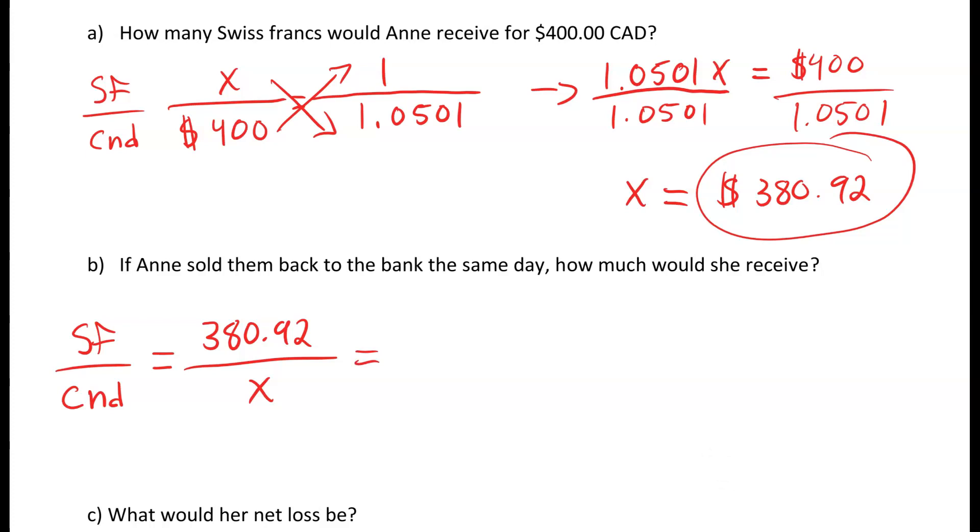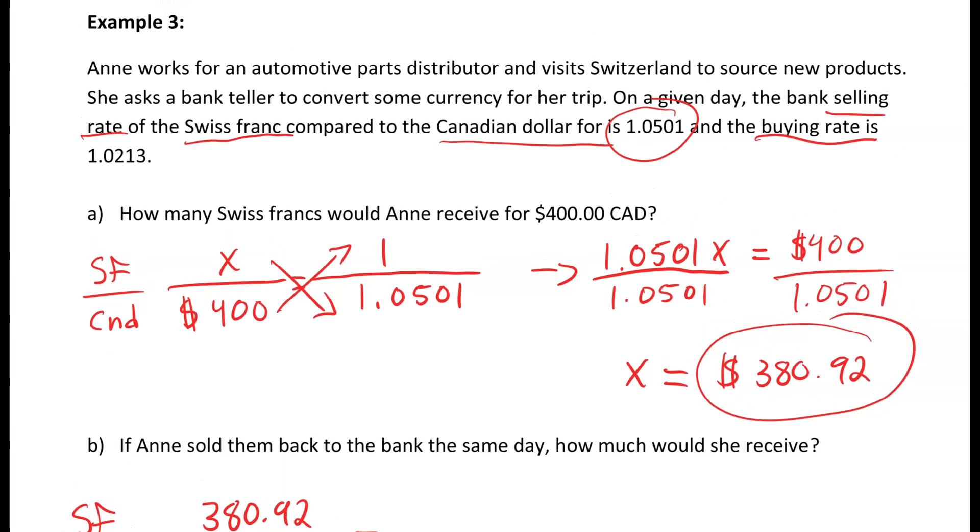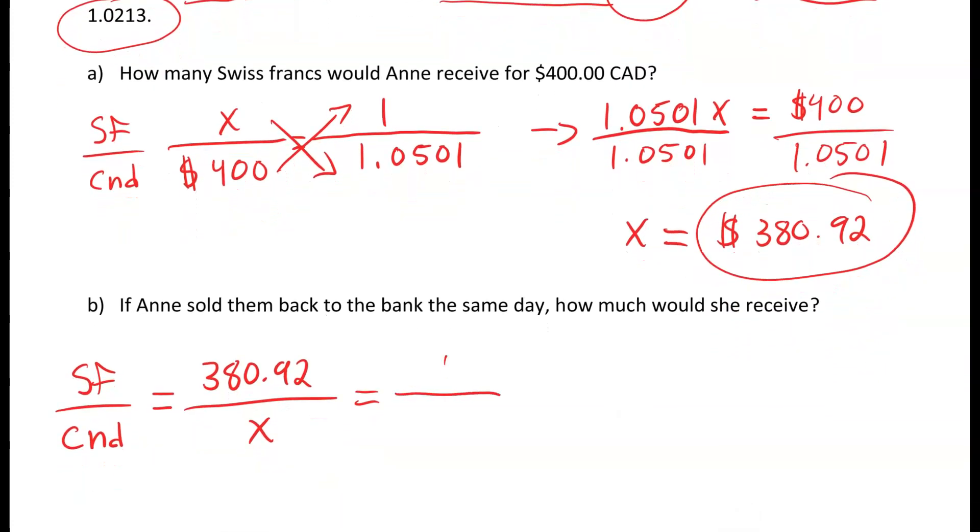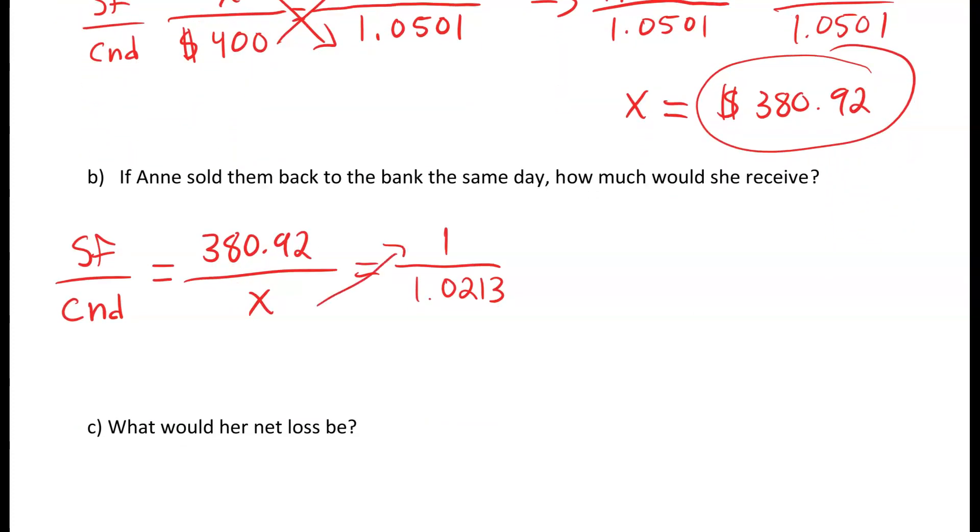We now have to use the buying rate because this is what they're going to be buying it from us at. So the buying rate will be 1 over 1.0213. We have our cross multiplication set up. So we'll have x multiplied by 1 which gets us x equals 380.92 multiplied by 1.0213, and we'll get $389.03. That's Canadian now.